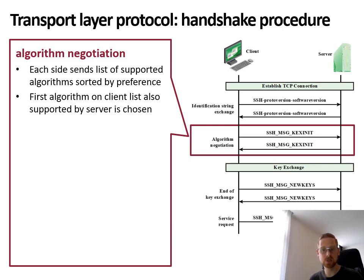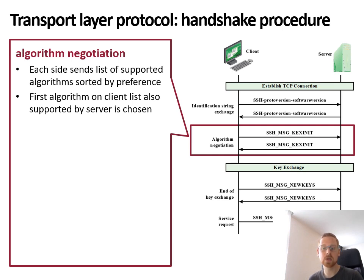To negotiate algorithms, each side — both the client and the server — send each other a list of algorithms they support, ordered by preference. Then the first algorithm on the client list that is also supported by the server — the one with the highest priority of the client that is supported by the server — is chosen.